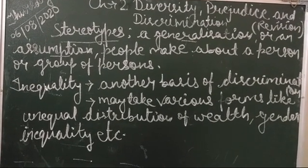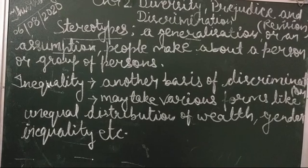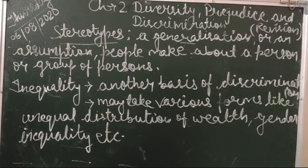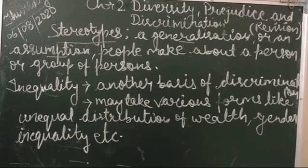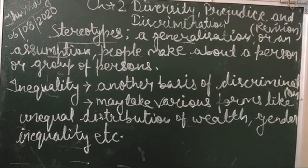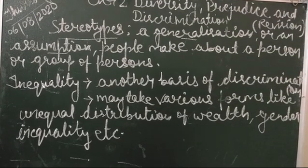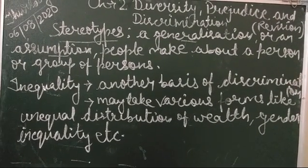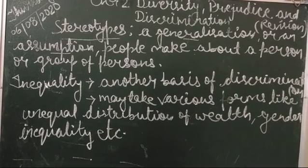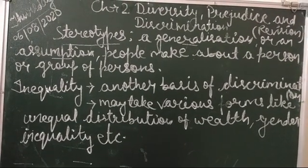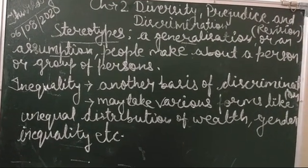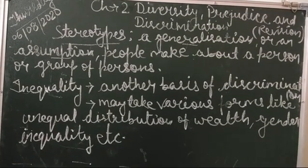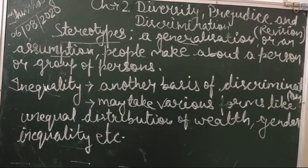Stereotypes often occur in minority groups. As stereotypes occur in minority groups, there is an existence of discrimination. Now let's understand the concept of discrimination. Discrimination is acting toward or treating individuals or groups in a different manner because they are different from others.